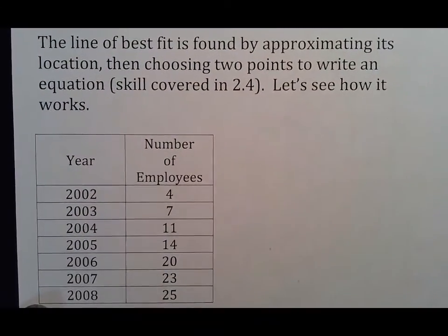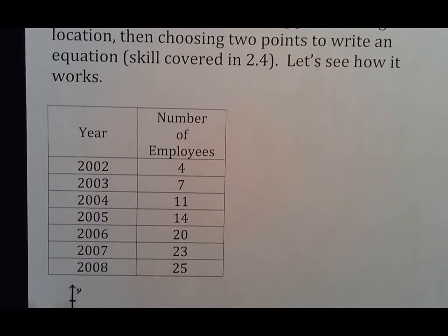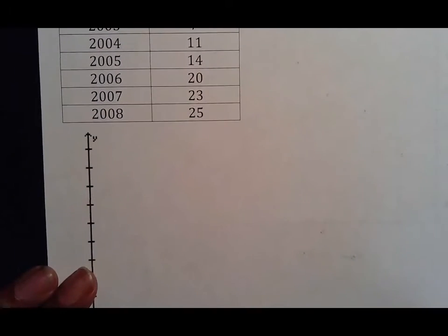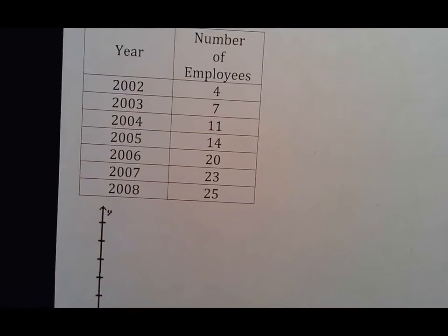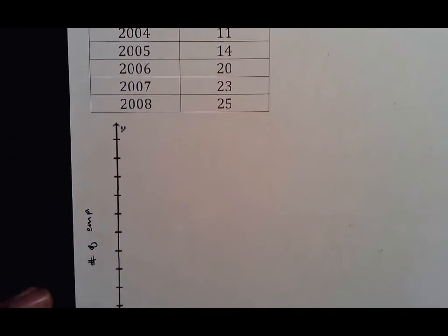The line of best fit is found by approximating its location, then choosing two points and writing an equation. We did X1, Y1, X2, Y2, plugged it into the Y equals MX plus B. I'm actually going to do this once we make the scatter plot. You have year and number of employees. Years go down here, and number of employees is here. Years go from 2002 to 2008. I think I'm going to do 0, 1, 2, 3, 4, 5, 6, 7, 8, which I think is what I'm going to do.